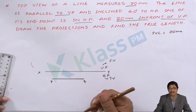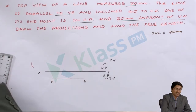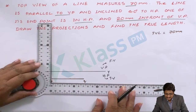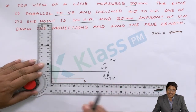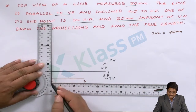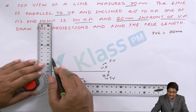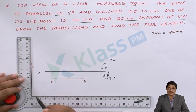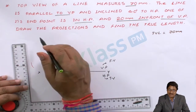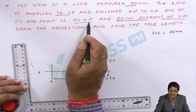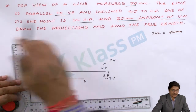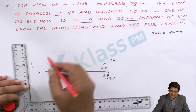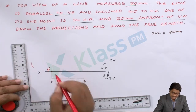Now we have to draw the front view. We know fundamentally that the front view of point P, called P', must lie on the vertical projector from P — front view and top view always lie on the same projector line. Once P is located in the top view, the front view P' must be somewhere on that projector line. The condition states one endpoint is in HP, and the front view gives details of HP, so there is no height above XY. Therefore P' lies on the XY line itself.